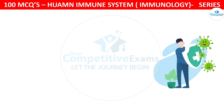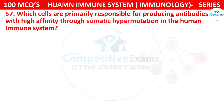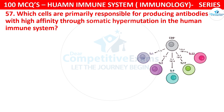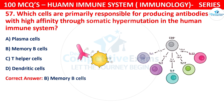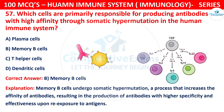Question number 57. Which cells are primarily responsible for producing antibodies with high affinity through somatic hypermutation in the human immune system? The options are plasma cells, memory B cells, T helper cells, or dendritic cells. The correct answer is B, that is memory B cells. Memory B cells undergo somatic hypermutation, a process that increases antibody affinity, resulting in antibodies with higher specificity and effectiveness upon re-exposure to antigens.